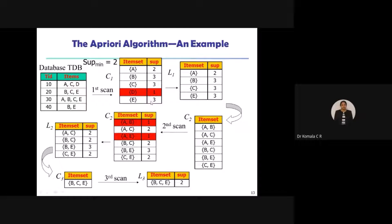Now you can observe: one time, two times, three times. I can take a minimum. I set my threshold — minimum support — as two. The maximum frequency is three and minimum is one, so I am taking a threshold value of two.